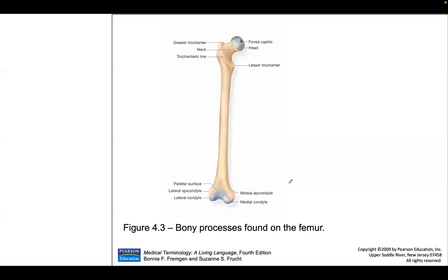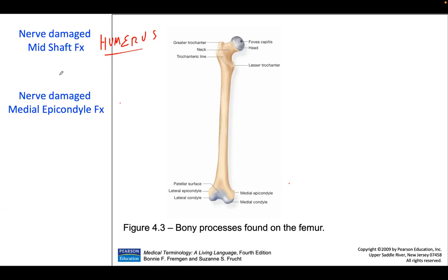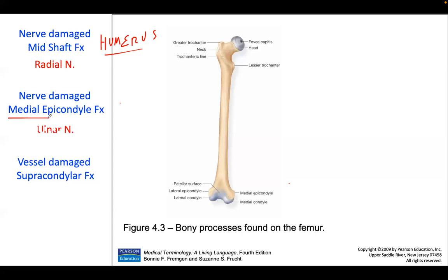For nerve injuries with humerus fractures: a mid-shaft humerus fracture damages the radial nerve. A medial epicondyle fracture damages the ulnar nerve. A supracondylar fracture damages the brachial artery. The classic presentation of radial nerve palsy is wrist drop, also called Saturday night palsy or crutch palsy.